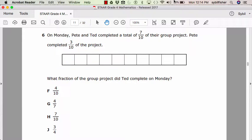Number 6. On Monday, Pete and Ted completed a total of 7 tenths of their group project. Pete completed 3 tenths of the project. What fraction of the group project did Ted complete on Monday? F, four tenths. G, four sevenths. H, seven tenths. J, three fourths.